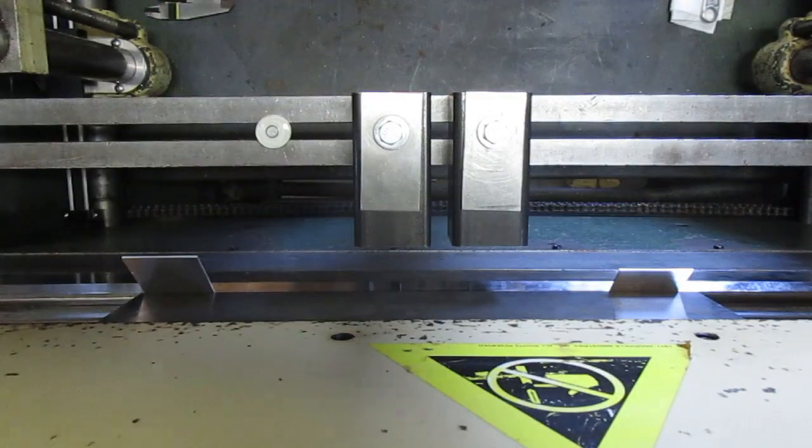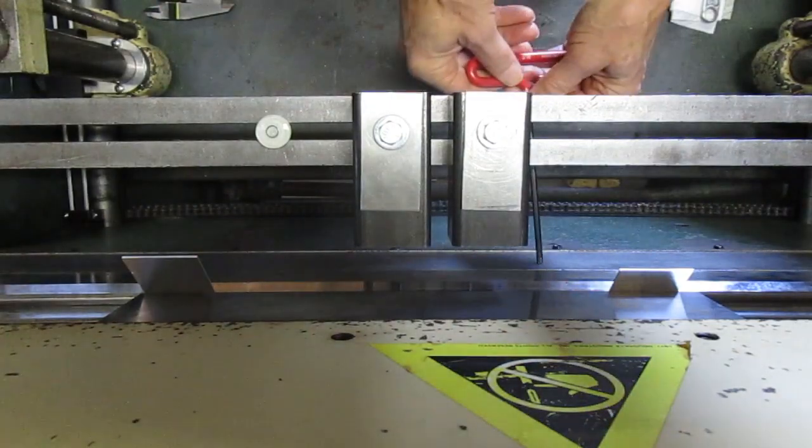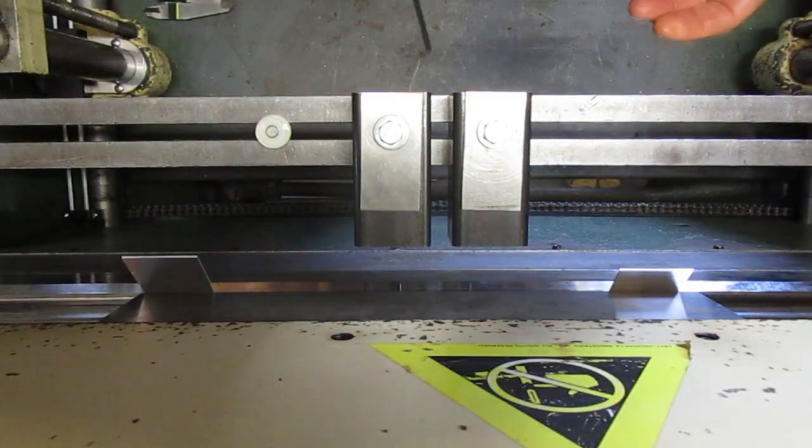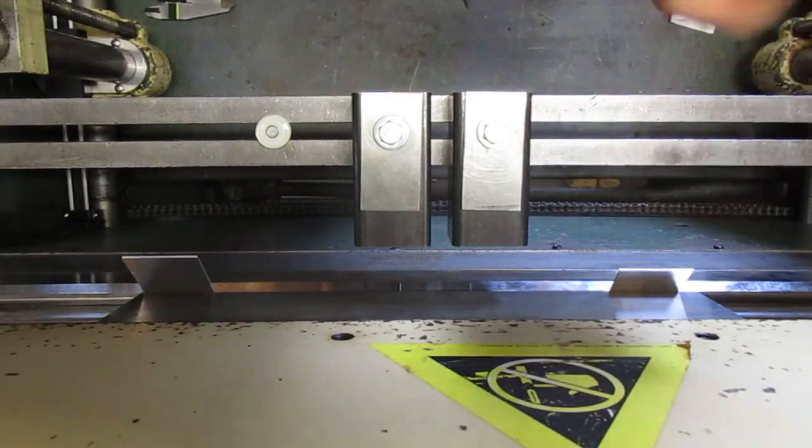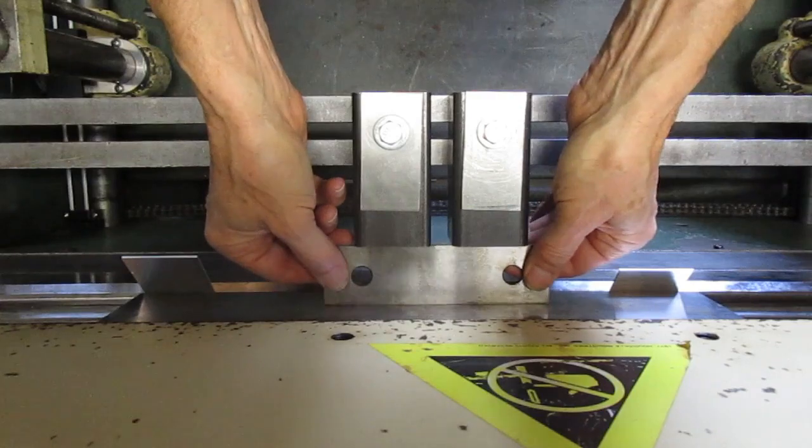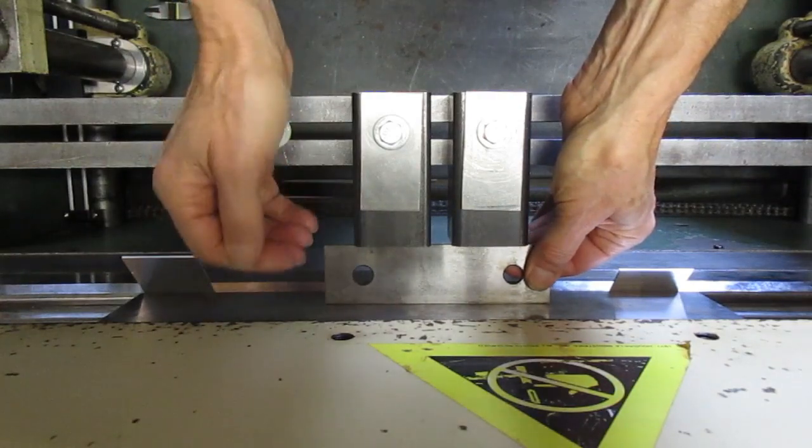So there are screws on the bed that hold the lower die down here. So those could be adjusted so that you can kind of dial out that little bit of slop. But this die has actually shifted forward just a slight amount.